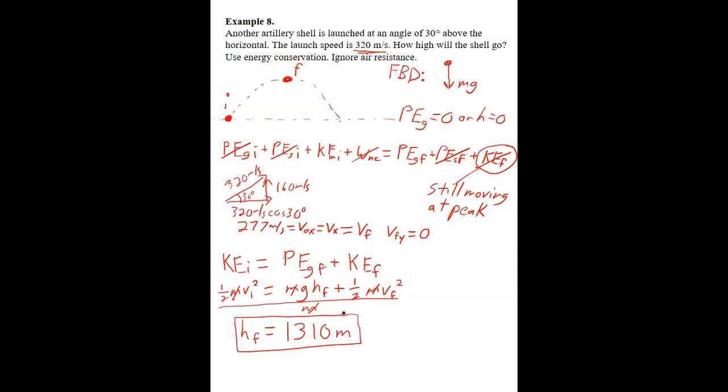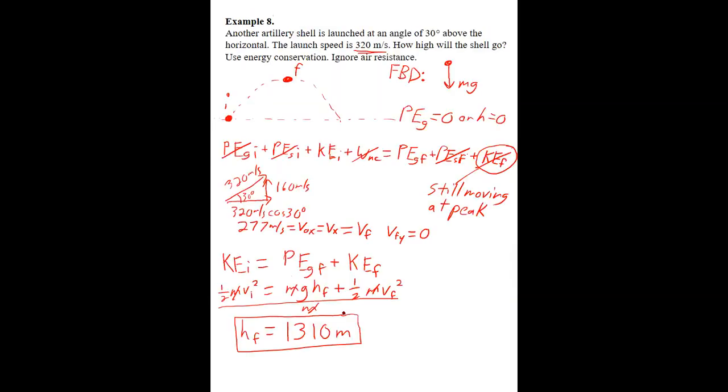Okay, and now we'll go on to another problem. And I guess I should say it makes sense that it doesn't go as high. It went 5,000 meters when it was shot straight up. It makes sense that it's not going to go as high if we shoot it at an angle.